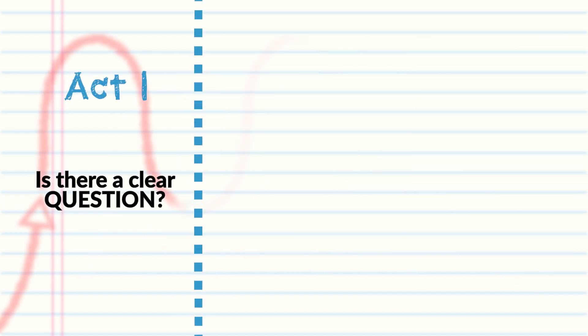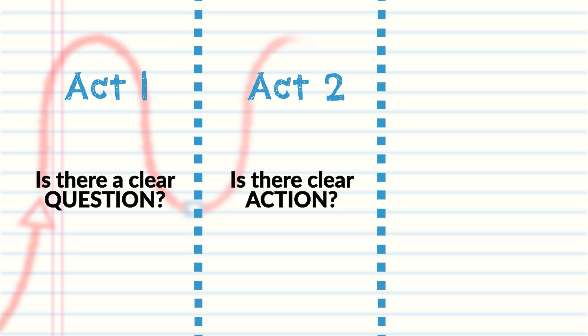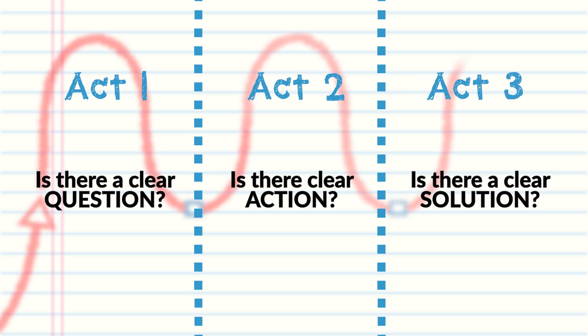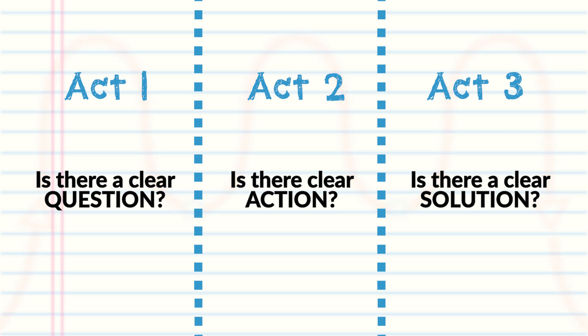In act one: is there a clear question for our hero to answer? In act two: is our hero doing something about the question? In act three: has our hero answered the question? If you answered no to any of those, go back and switch out and trim up shots so that it's clear — not clear to our character, but clear to you, the editor.